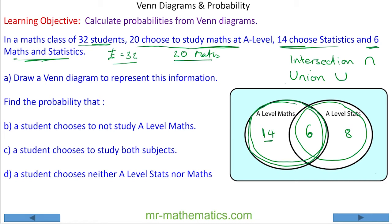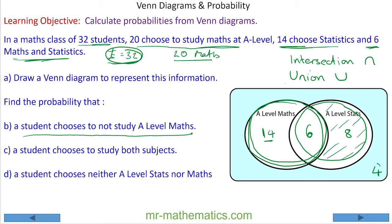In our union we have 28 people, but our universal set has 32 people, so we know 4 of them fall outside of the union. We can use this to find the probability that a student chooses not to study A-level maths. If they chose not to study A-level maths, they must be outside the maths oval — that could also be outside of the union, so that would be 8 and 4, which is 12.